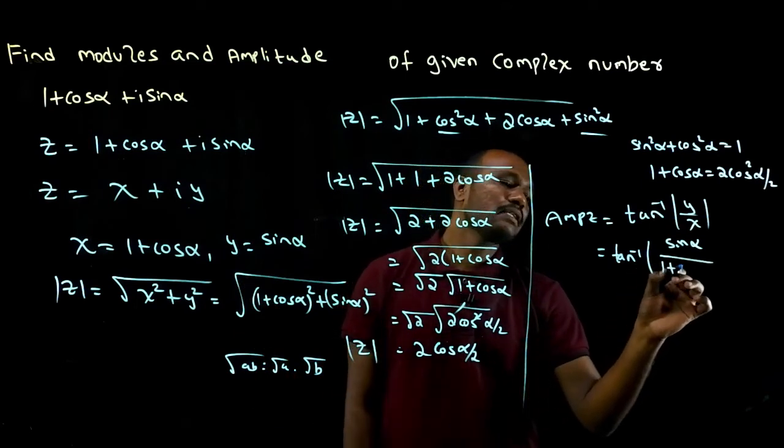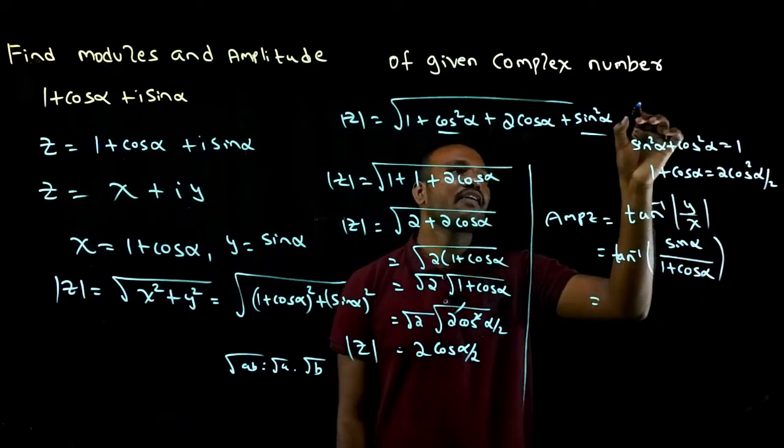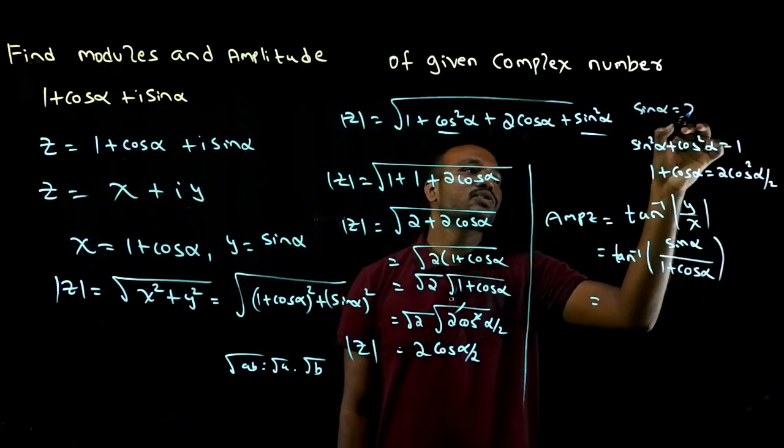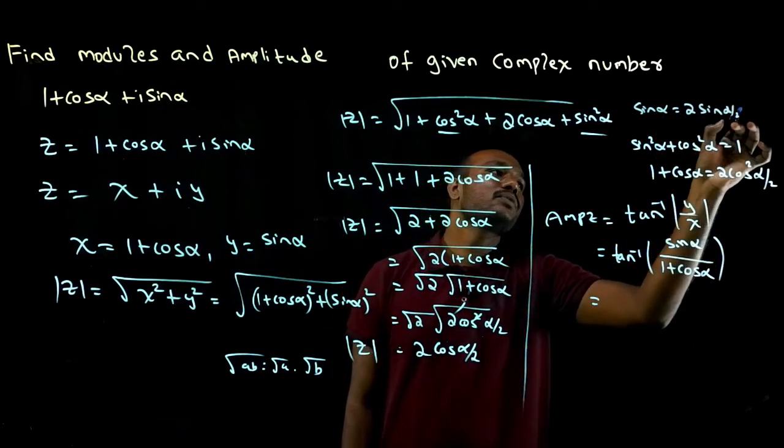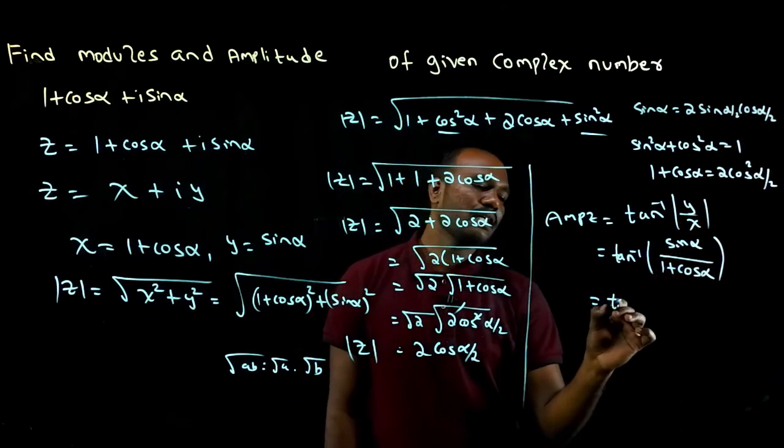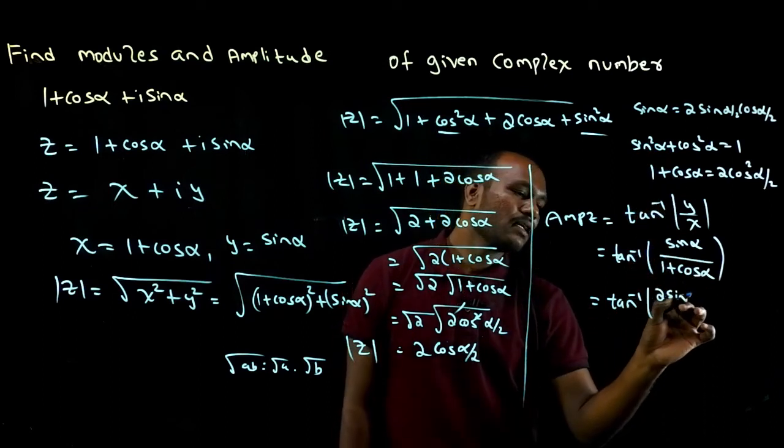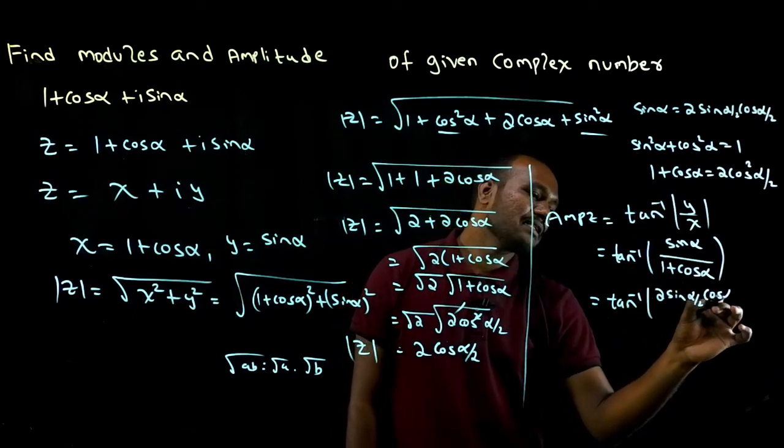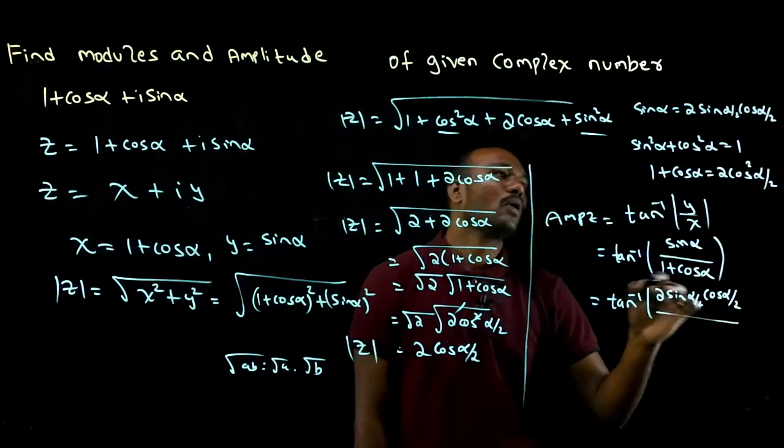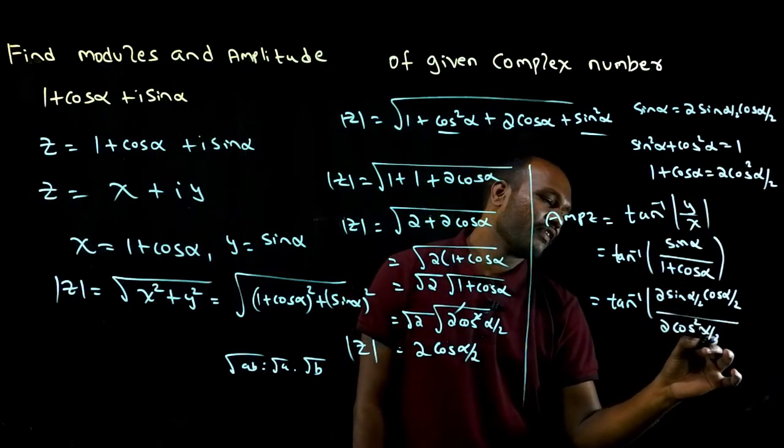X is 1 plus cos alpha. There's another formula you need to remember: sine alpha is 2 sine alpha by 2 cos alpha by 2. If I substitute that, tan inverse of 2 sine alpha by 2 cos alpha by 2 divided by 1 plus cos alpha, which is 2 cos square alpha by 2.